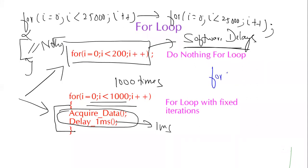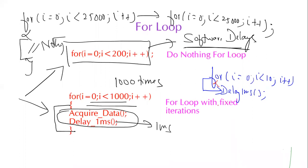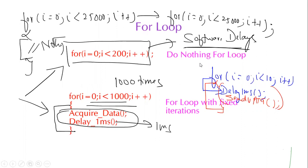One important note about for loops: if there is only one statement below the for loop, curly braces are optional. However, if there are multiple statements, curly braces are mandatory. The recommendation is to always use curly braces with for loops regardless of whether you have one statement or more — this eliminates any chance of error.